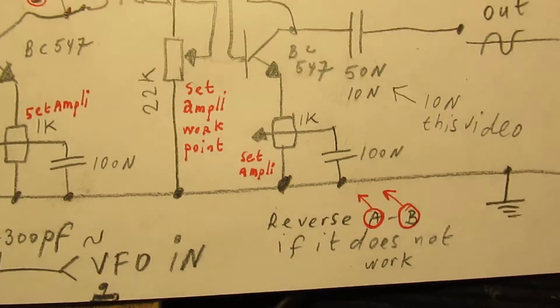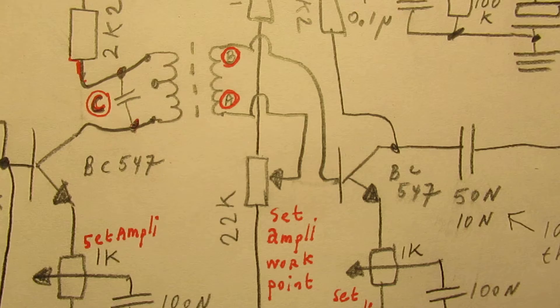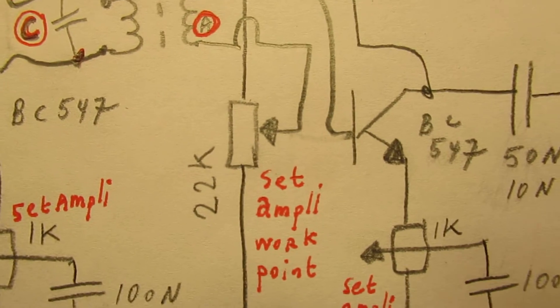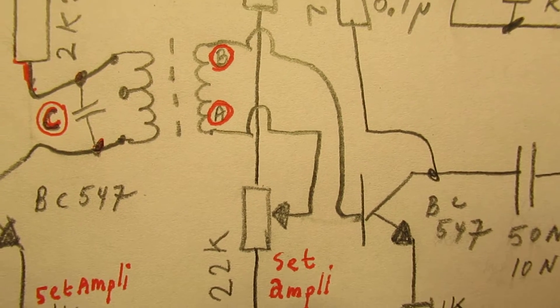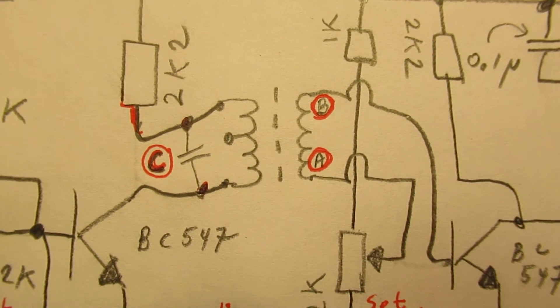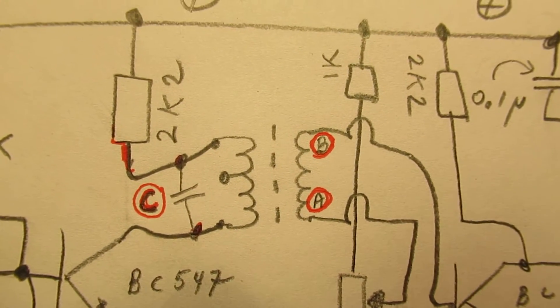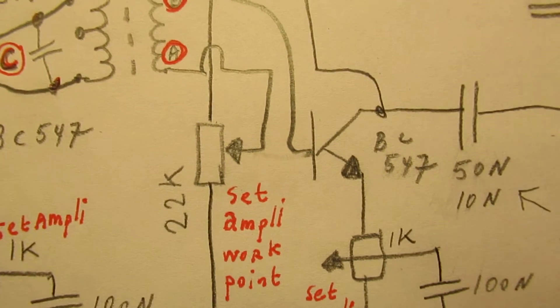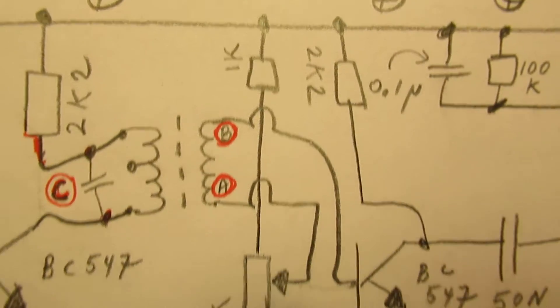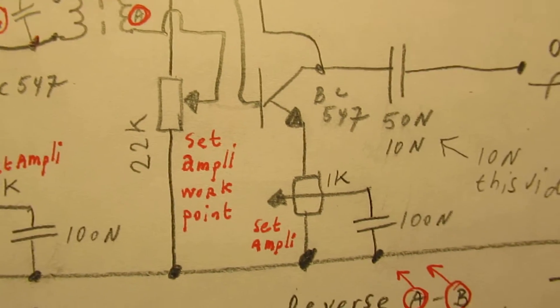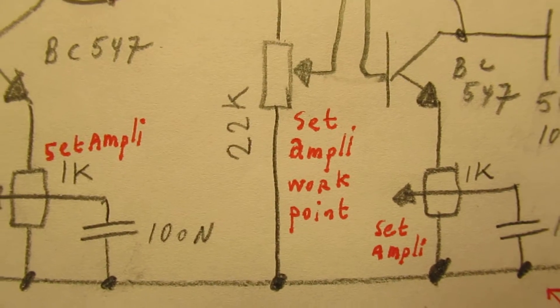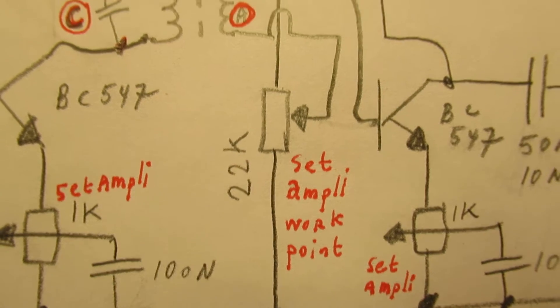That's the reason why you can see here that I connected the potentiometer to the wiper of the potentiometer, the coil, the output coupling coil, and then it goes to the base. At the same time we can set the working point of the transistor with the help of that 22k potentiometer.